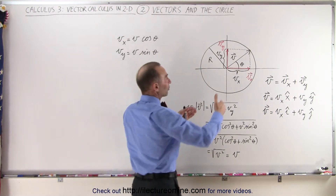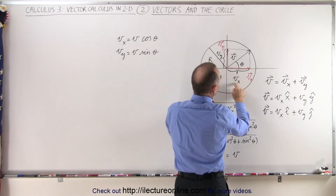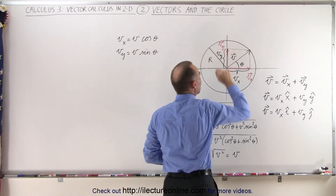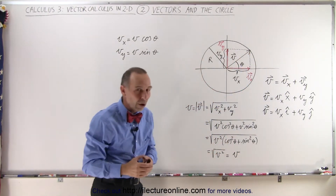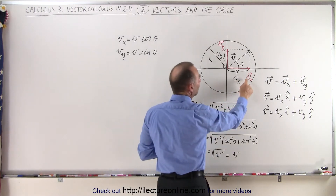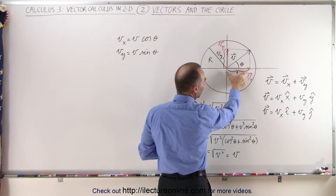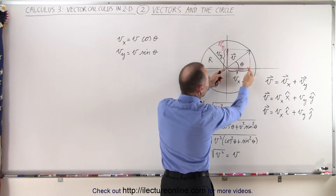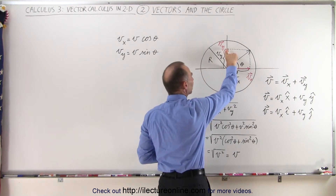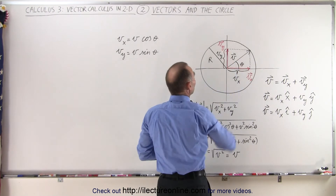If we project the vector down to the x-axis, this distance here is the length or the magnitude of the x component of the vector. And if we project the vector onto the y-axis, this length right here is the magnitude of the y component. In red you can see the actual x component of the vector — not just the magnitude, because there's no arrow on here; simply this means magnitude — but this means an actual vector pointing in the x direction of length v sub x. And here we have an actual vector pointing in the y direction with length v sub y.